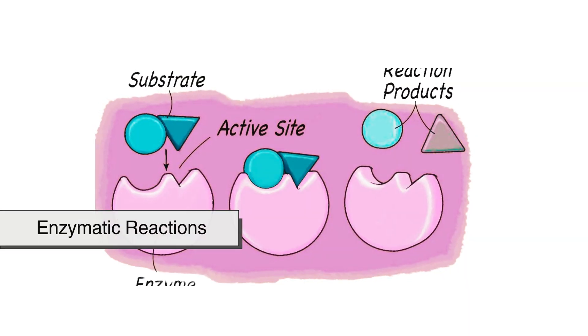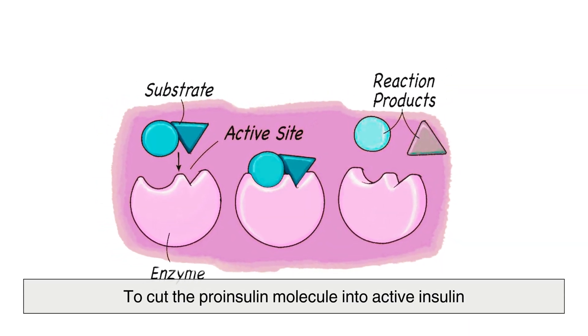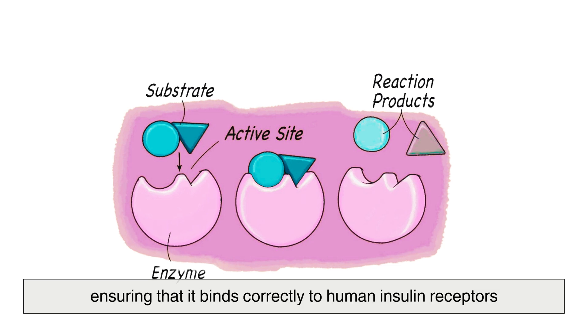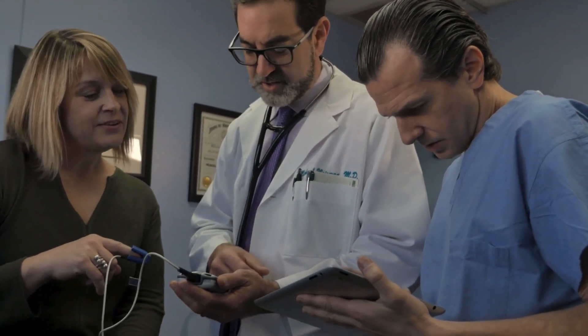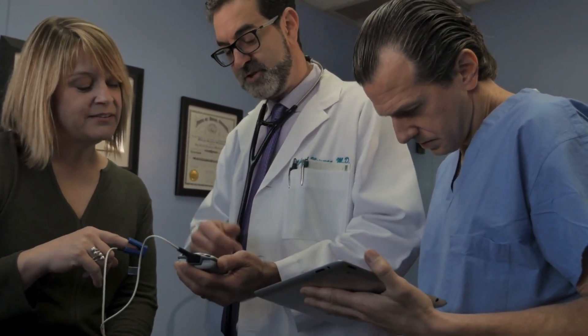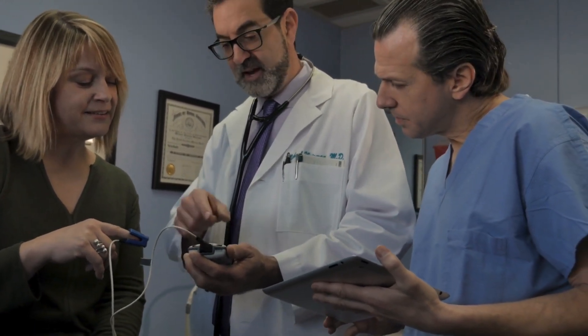Scientists use enzymatic reactions to cut the proinsulin molecule into active insulin, ensuring that it binds correctly to human insulin receptors. If even a small mistake occurs during this process, the insulin may not function properly, which could have life-threatening consequences for patients who rely on it.